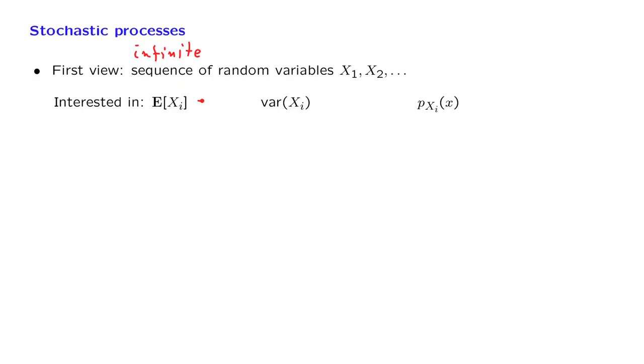For the case of the Bernoulli process, this would be easy to do. We know what the expected value is. We have a formula for the variance. And we have a fairly simple PMF. There's probability P that x is equal to 1, and probability 1 minus P that x equals 0.